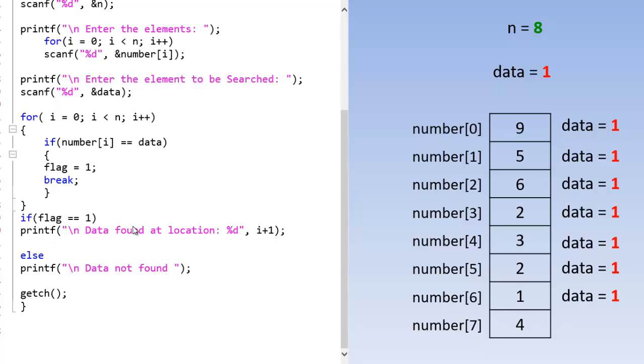So this will be true again. Data found at location percent. In this case 6 plus 1 is 7, which is actually the 7th place of the array where my data is stored. So I will say data found at location i plus 1, which is 7.